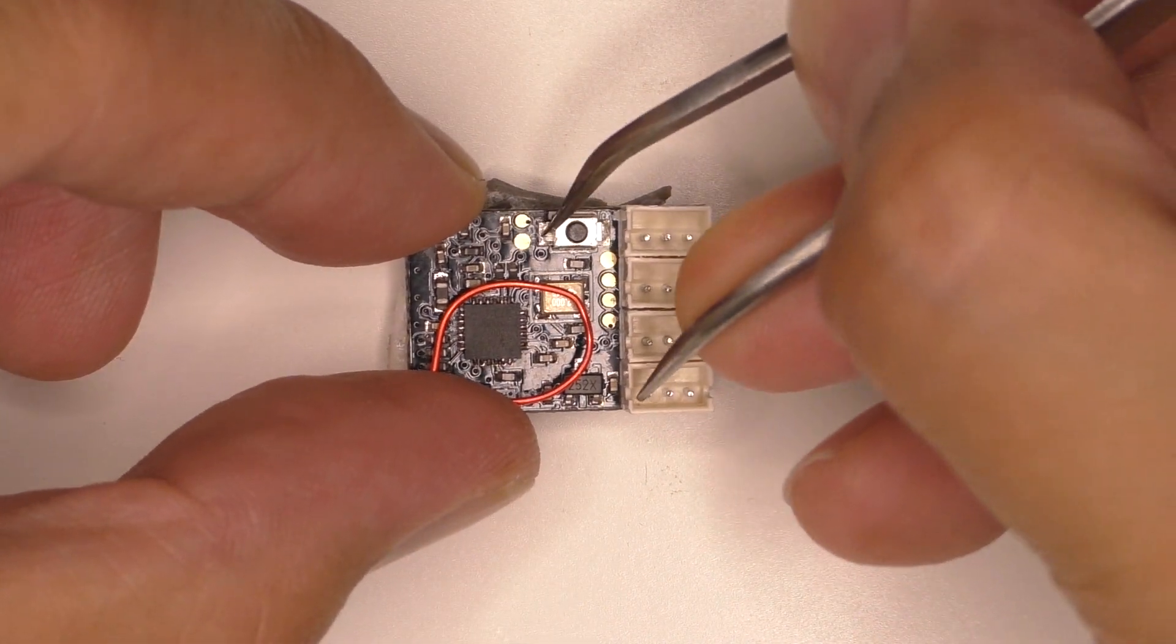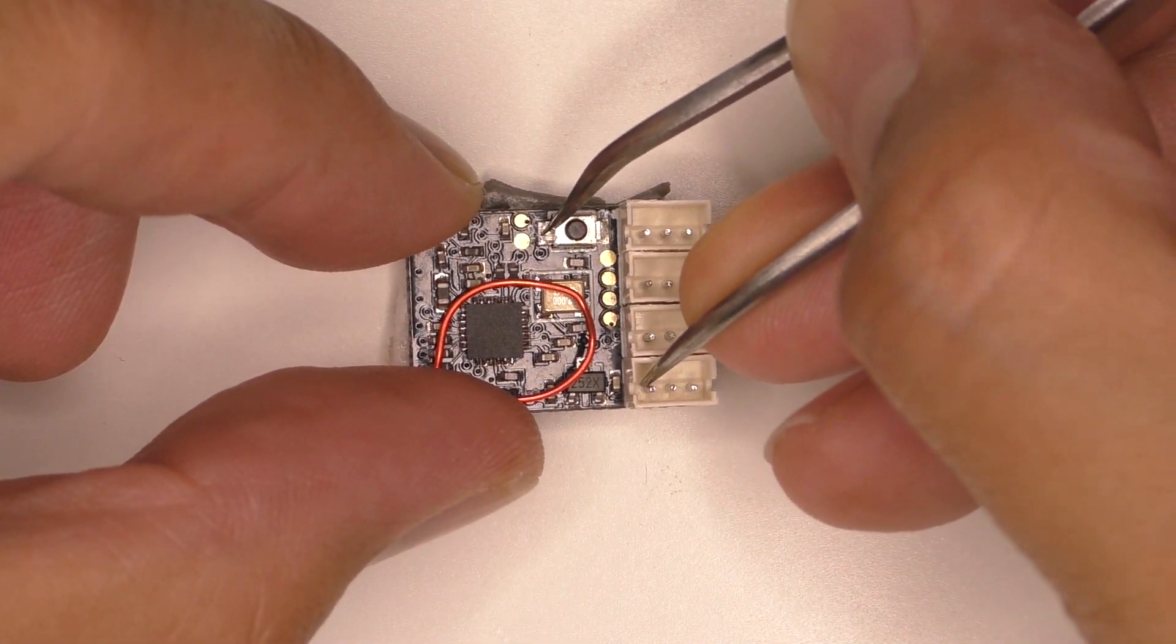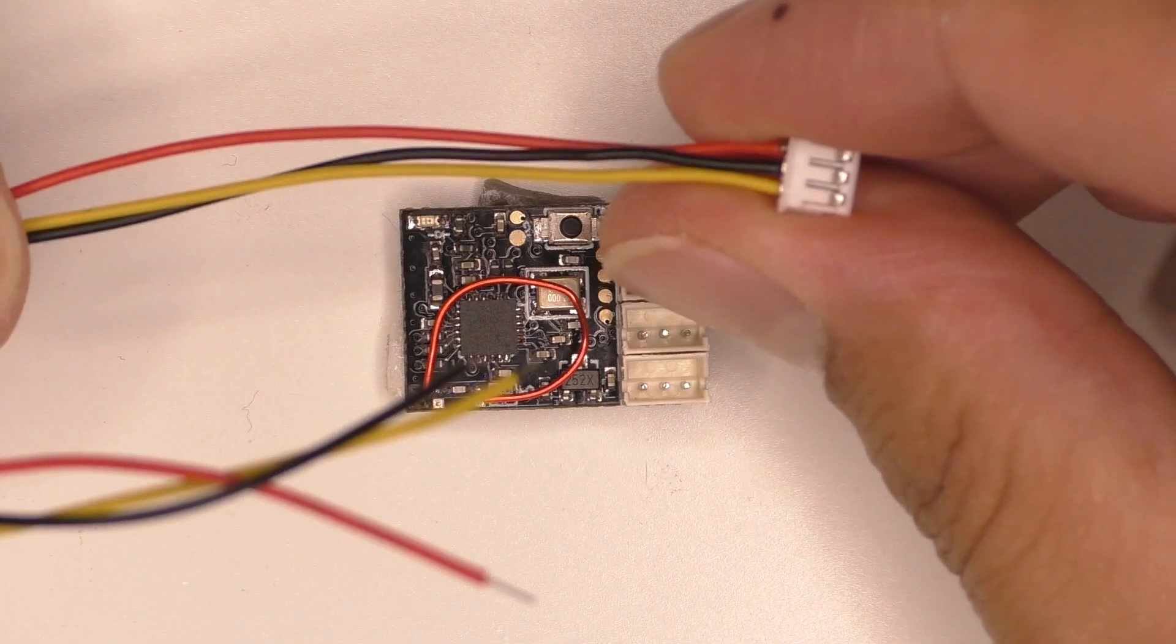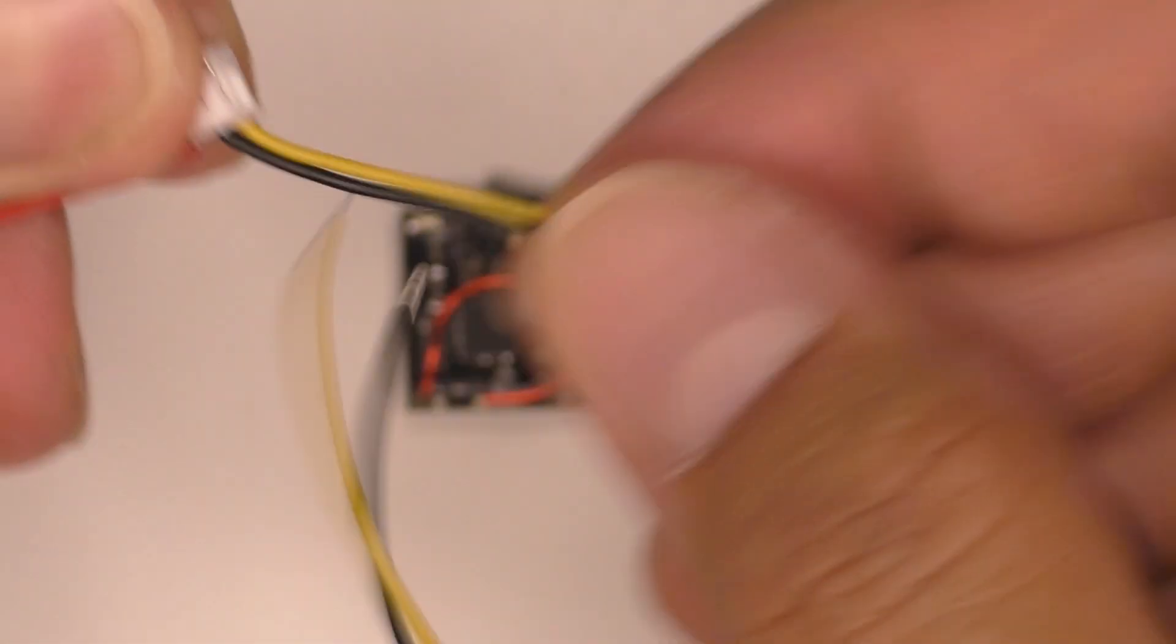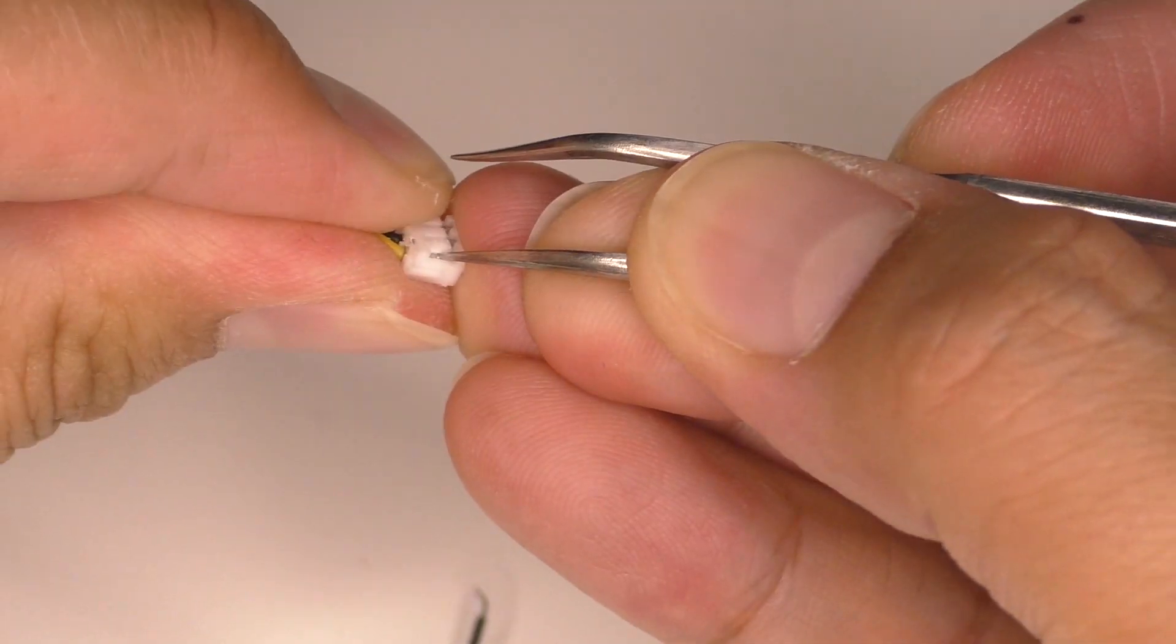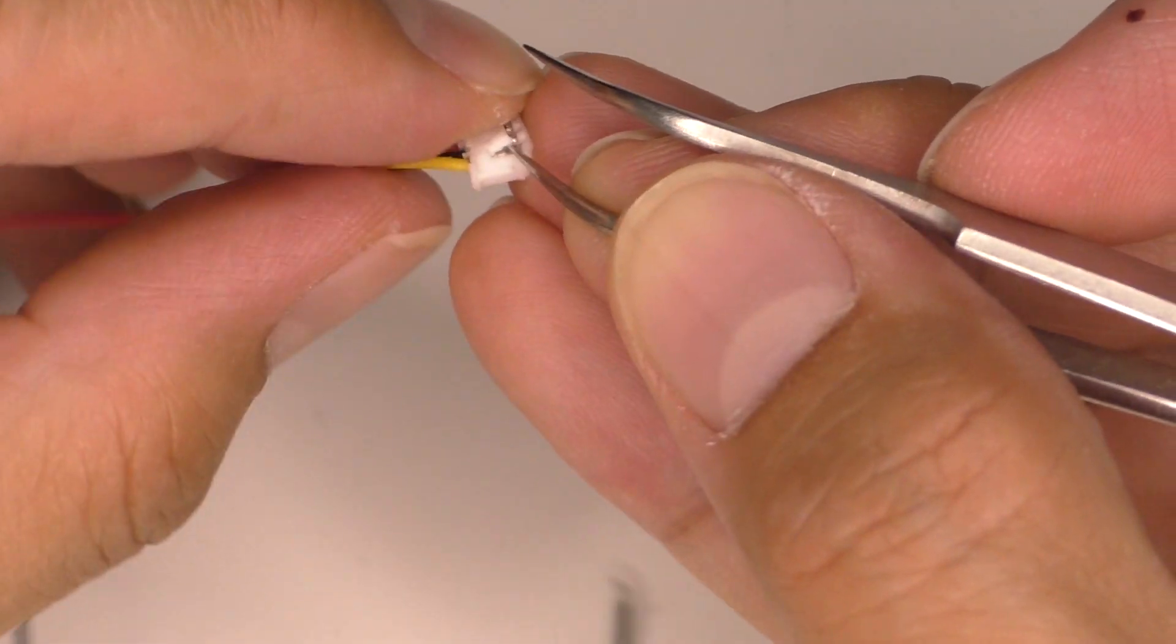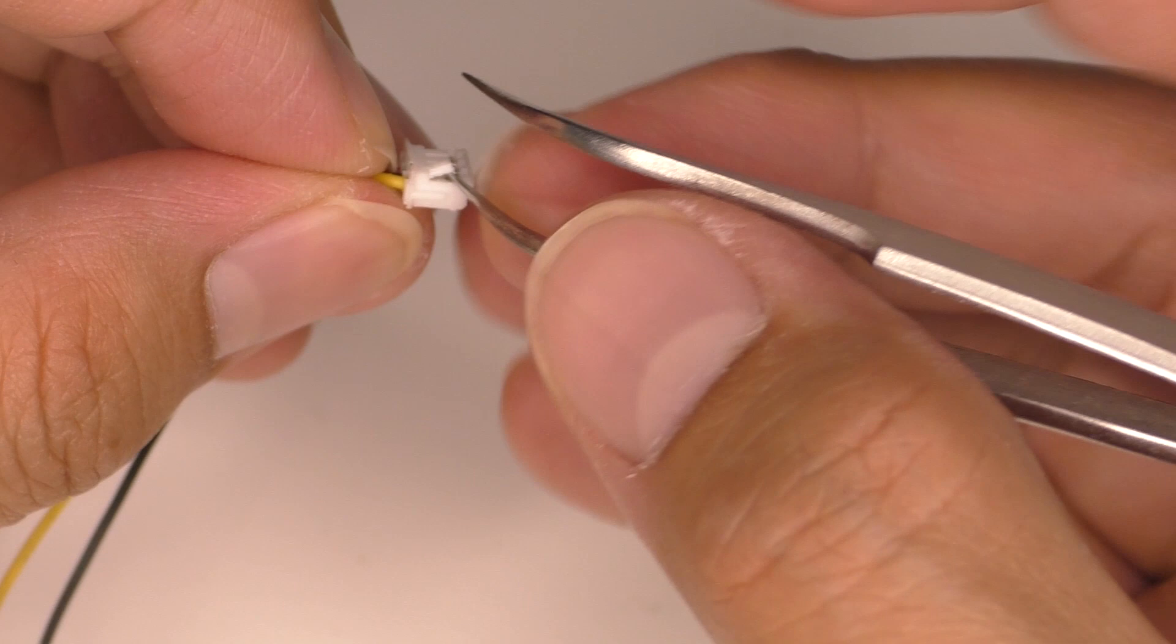You can use a tweezer to bridge between these two spots, like this. But it's uncomfortable for me, so I'll use a plug to do it. To make it easier, I'll pull these two wires out first. Use a pair of tweezers or something sharp to lift the plastic tab up and pull the wire out.